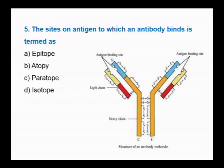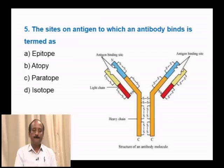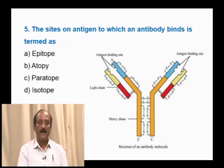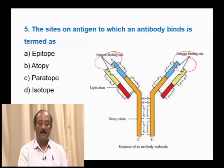Question number 5: The site on antigen to which an antibody binds is termed as — epitope, atopy, paratope, isotope. A site on antigen through which it binds with antibody is called an epitope. A region of antibody to which a specific antigen binds is called a paratope. Hence, the site on antigen to which an antibody binds is termed an epitope. The correct answer is option A.